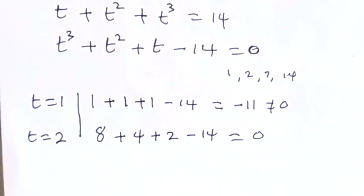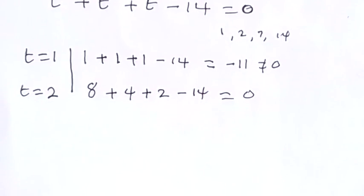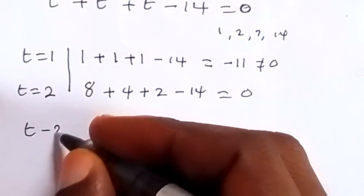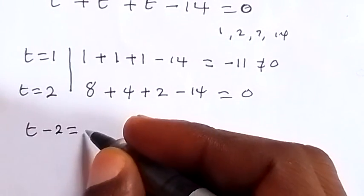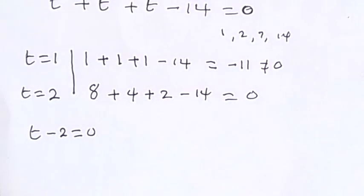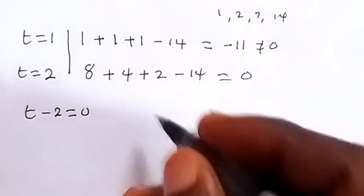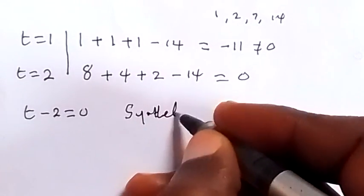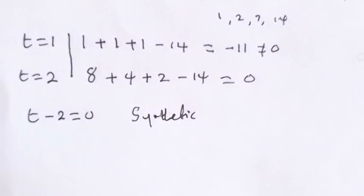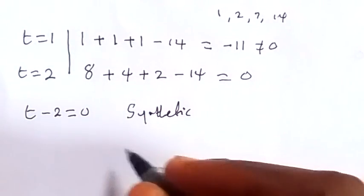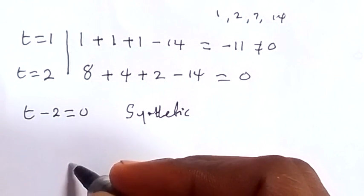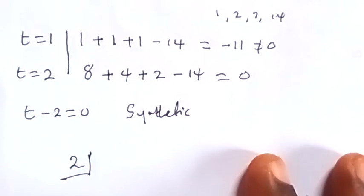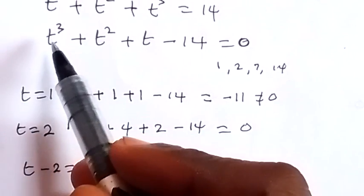So t equals 2 is a root. That means t minus 2 is a factor, so t minus 2 equals 0. To get the other factors, we can use synthetic division — we use 2 to divide the polynomial.